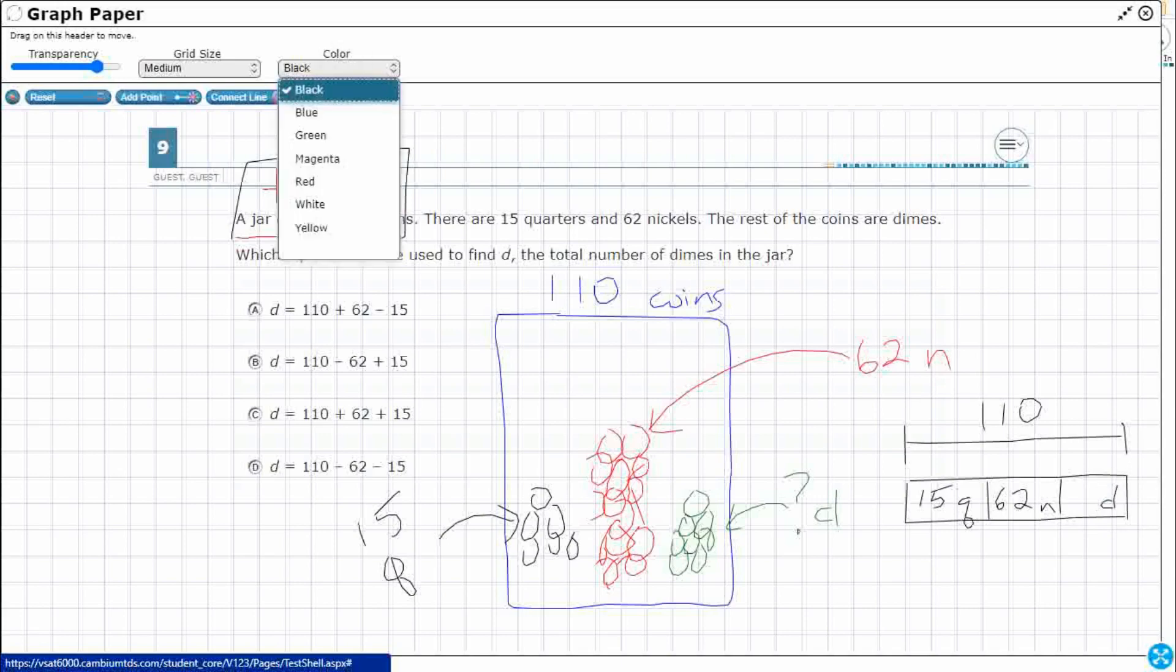Well, let's look at some of our options. Our options over here are always d equals. I've got my 110. Then I got to do something with my 62, either add or subtract, and then do something with my 15, either add or subtract.